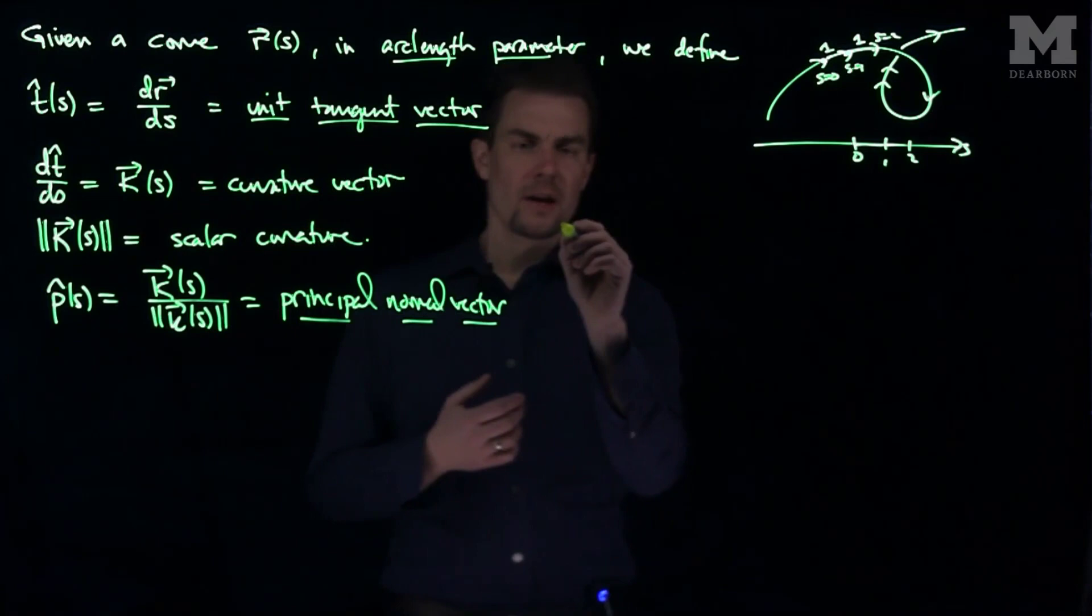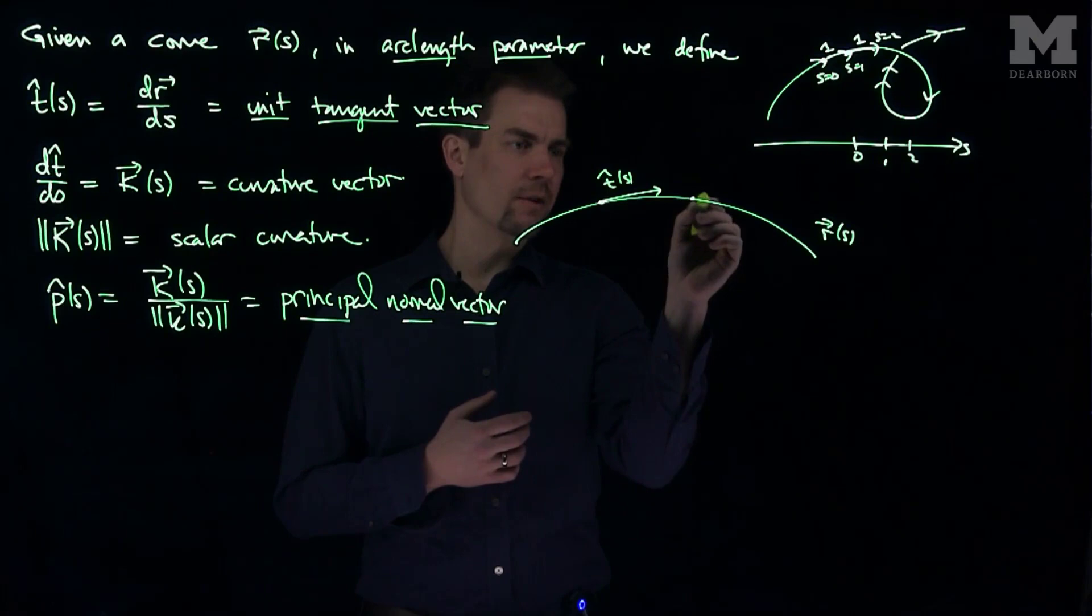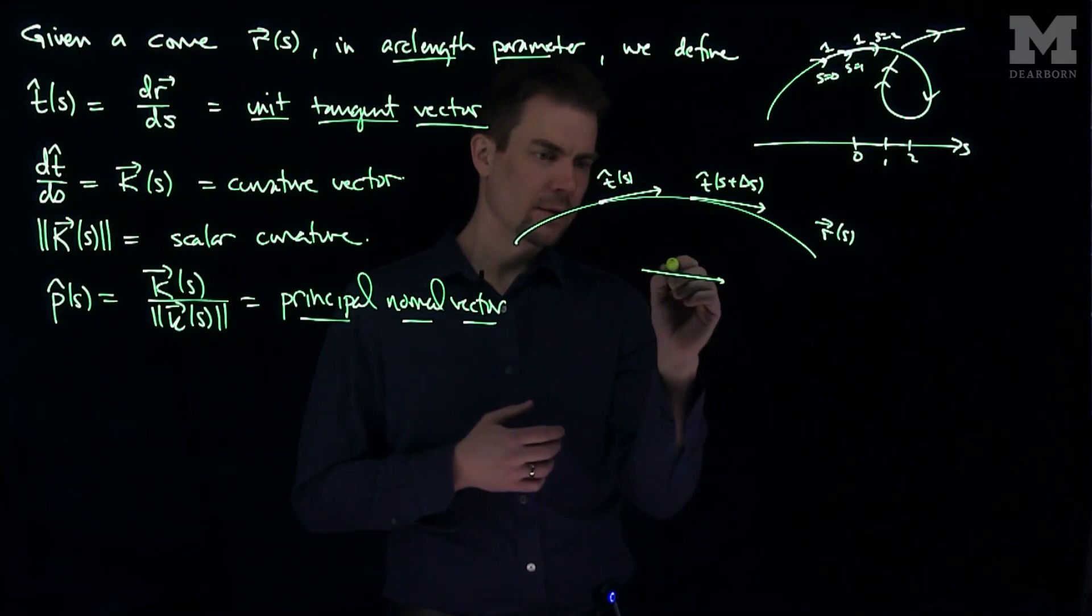The principal normal vector on a curve, if we think about it, so if we have a curve like this, here's my curve r of s, then over here what we have is the tangent vector t hat of s. If I advance a little bit further, this will be t hat of s plus delta s. If we plot these curves over here, so here's t hat of s plus delta s.